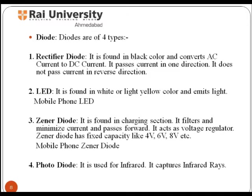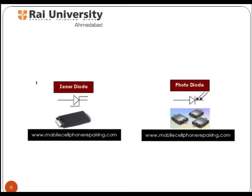The rectifier diode passes current in one direction and does not pass current in the reverse direction. The Zener diode is found in the charging section; it filters and minimizes current, passes forward, and acts as a voltage regulator. LED is another type of diode, found in white or light yellow color. It emits light, such as the mobile phone LED. A photo diode is used for infrared and captures infrared rays.